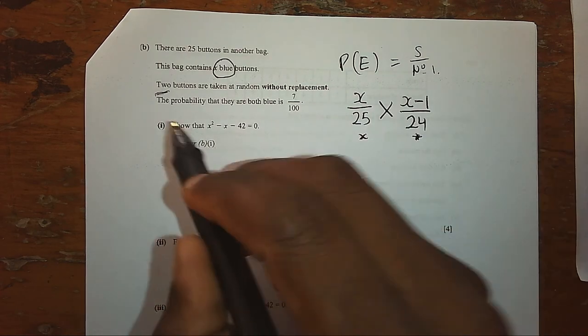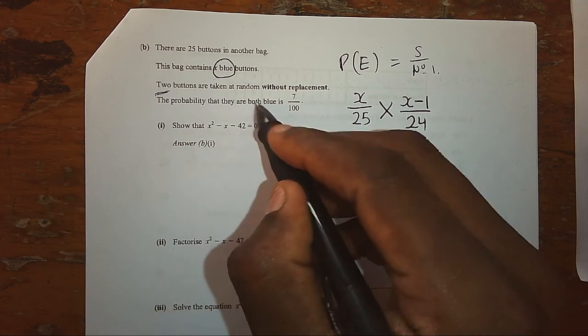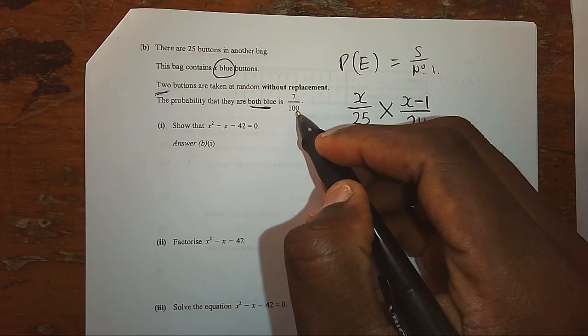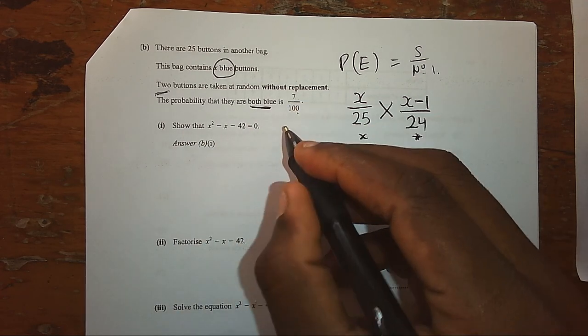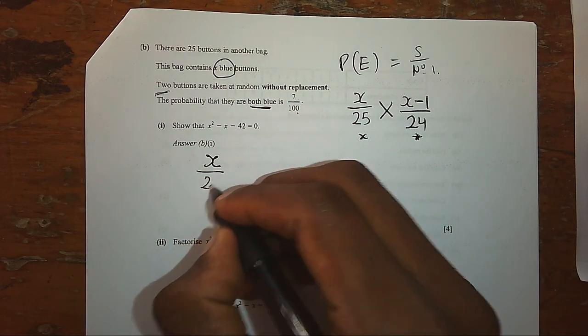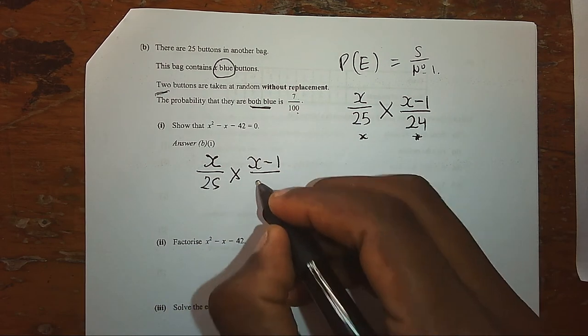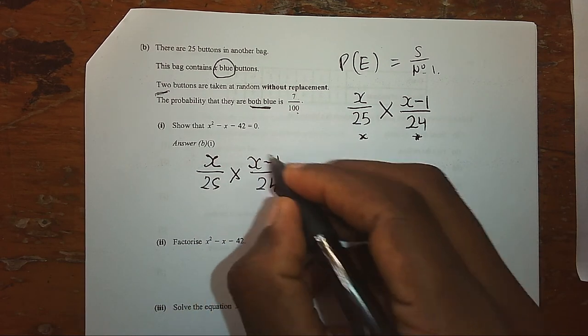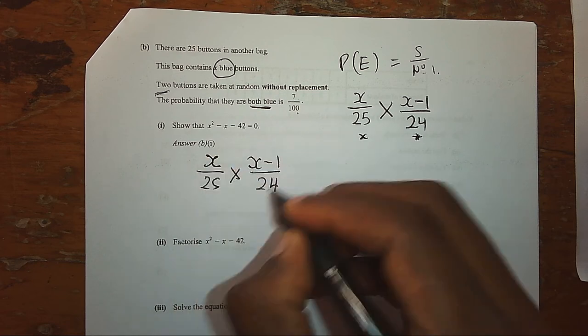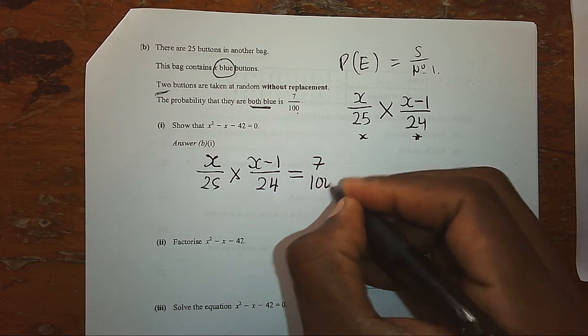Now, if the probability that picking both blue is 7/100, this exactly tells us that picking the first button and picking the second button, if you simplify this probability, it will be exactly the same as 7/100.